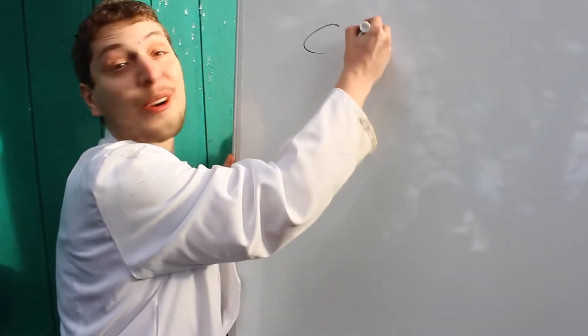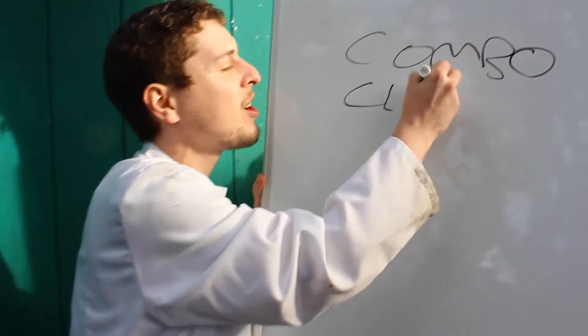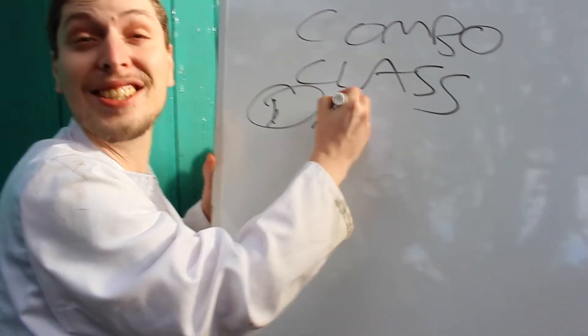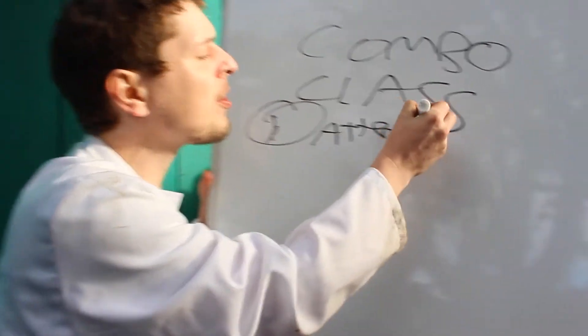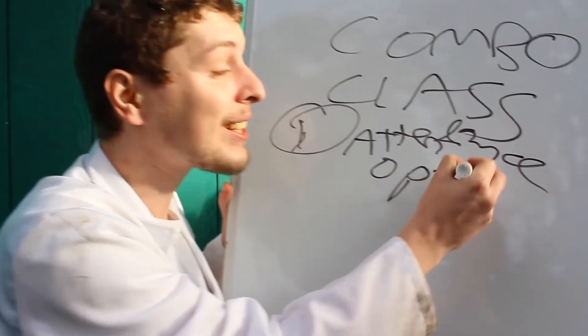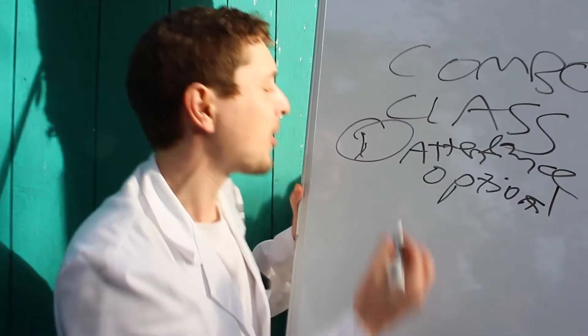Now that we're starting up combo class, better establish some classroom rules. Rule number one, attendance is optional. You don't have to come to all the videos or watch all the lectures if you want. Maybe you like the math stuff more or the science stuff more or the music or whatever. So come to whatever classes you want.